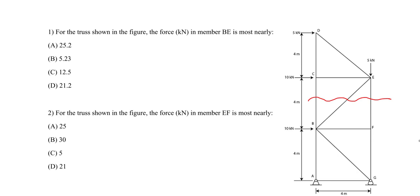So we make our cut. After we do that, we're going to have this force — the force in EF, this force — the force in BE (or EB, the orientation doesn't matter), and this force — the force in CB. Making that cut exposes the top and bottom portions of the truss. I'm going to solely look at the top portion, because looking at the bottom portion would require solving for reactions, which I can simply avoid by focusing on the top.